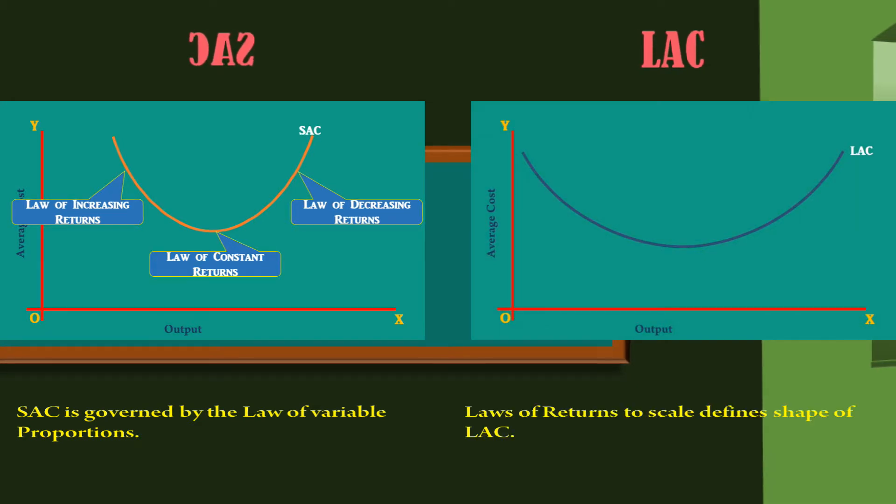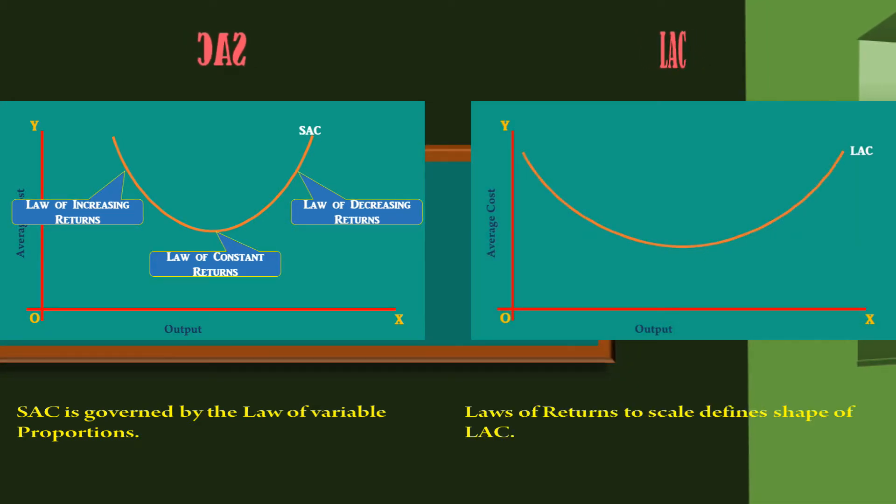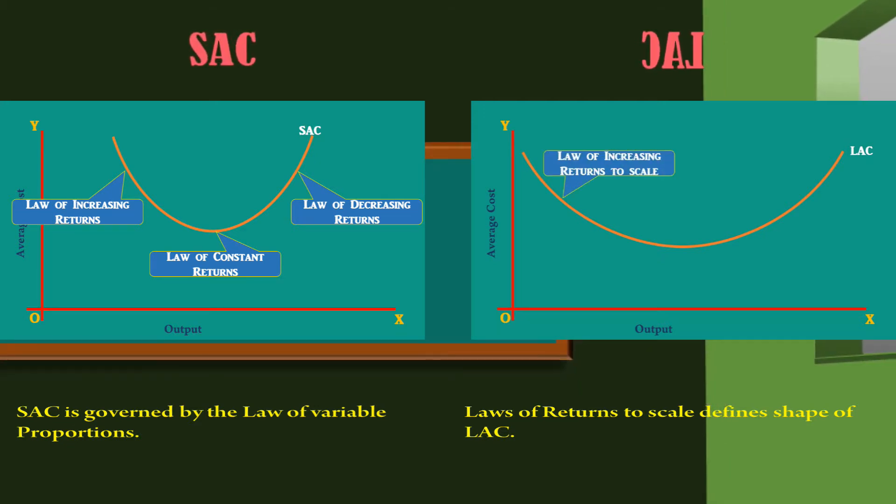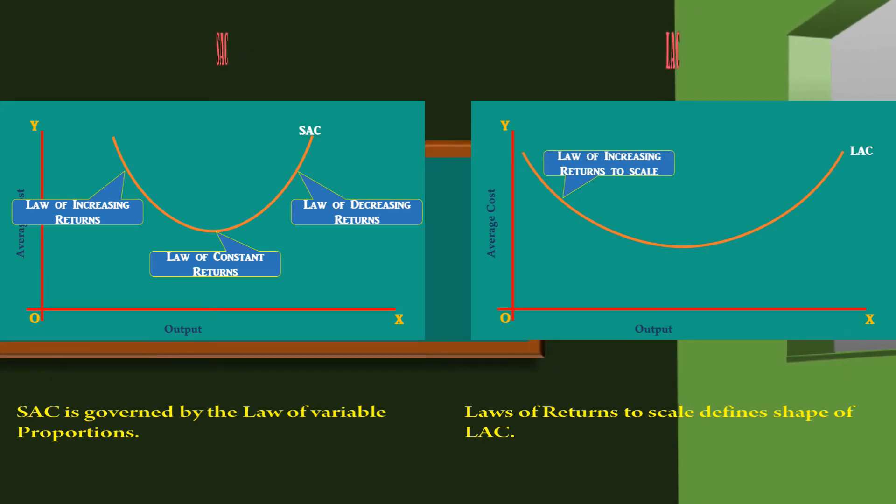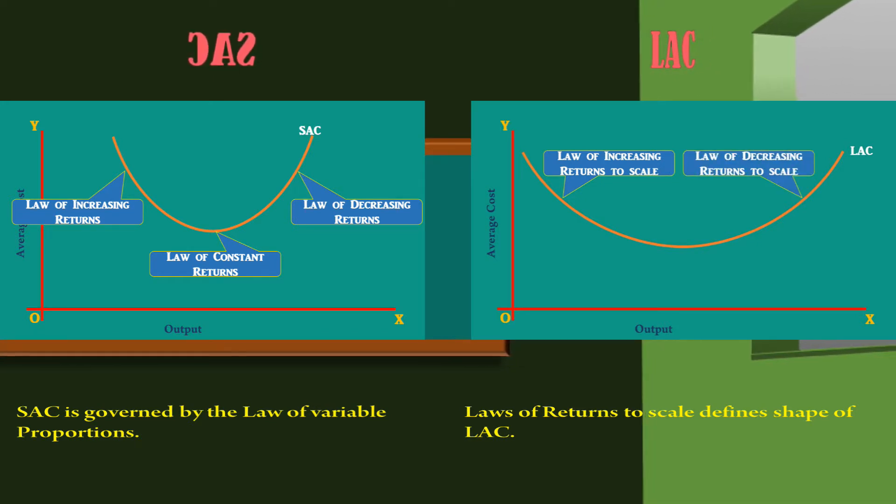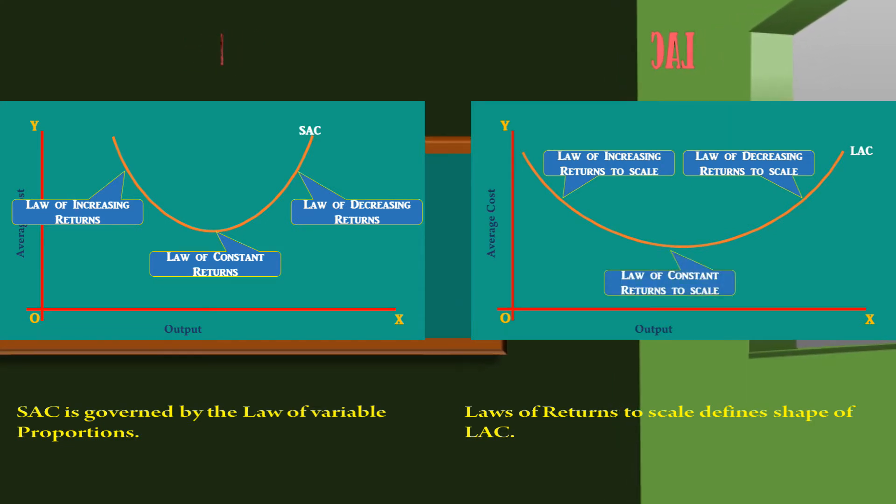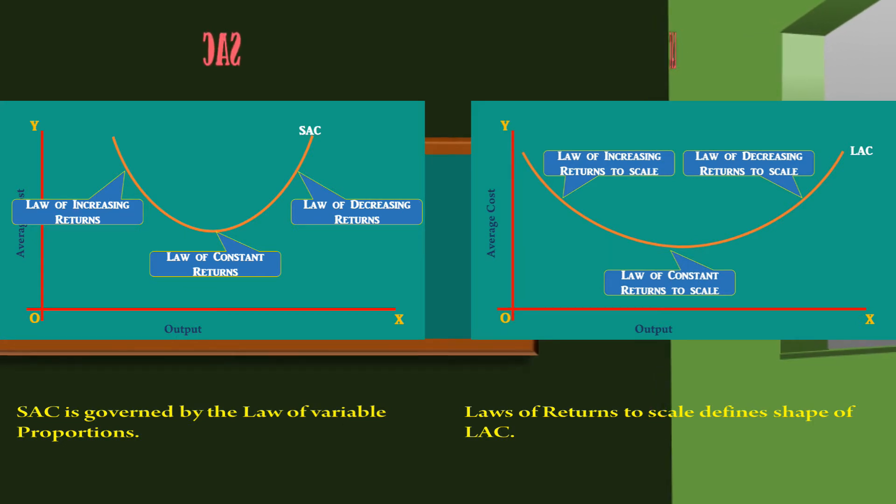The laws of returns to scale define the shape of the long run average cost curve. The operation of the law of increasing returns to scale makes the curve fall first. The long run average cost curve rises due to the law of decreasing returns to scale. At its minimum point, the law of constant returns to scale operates.